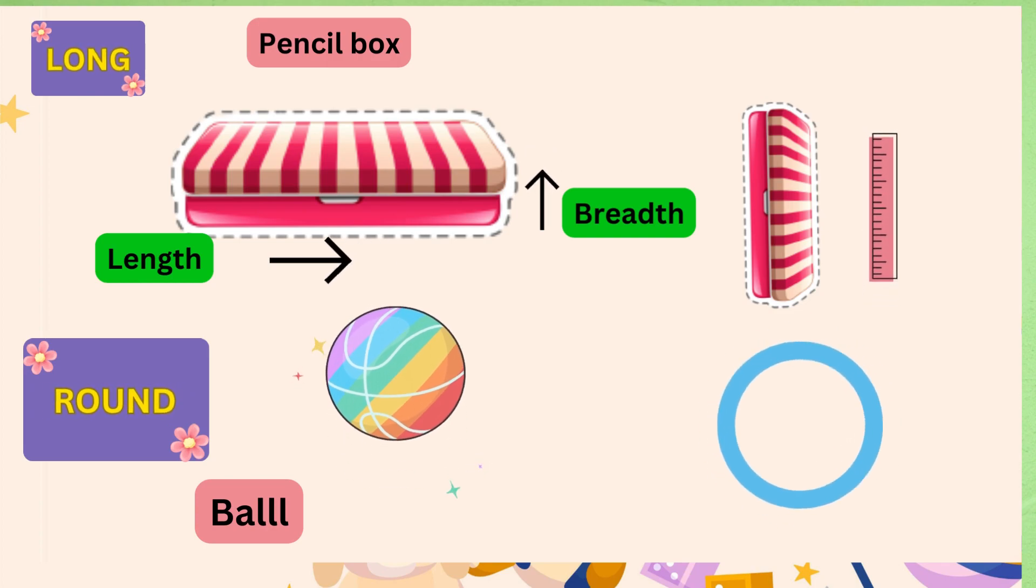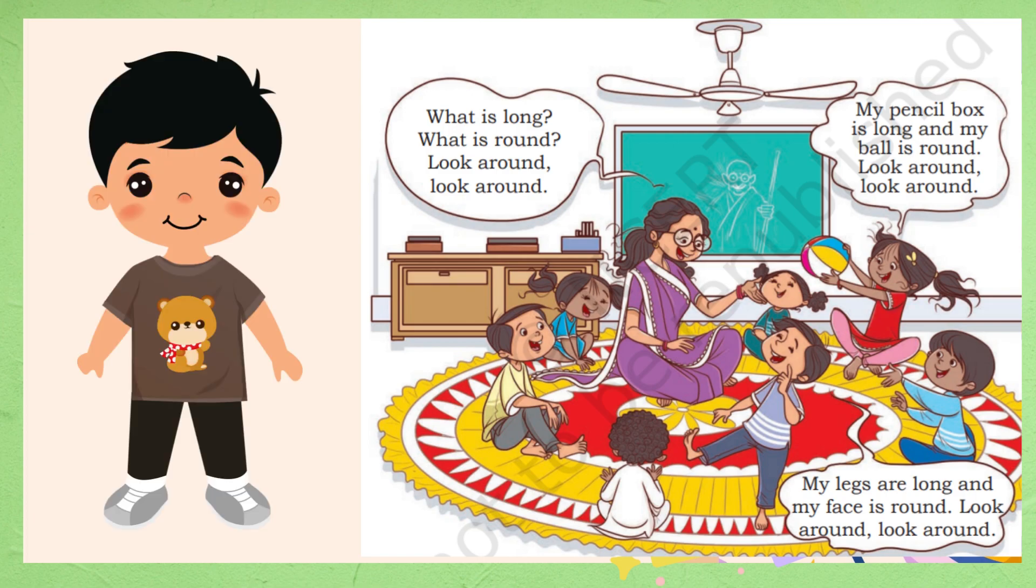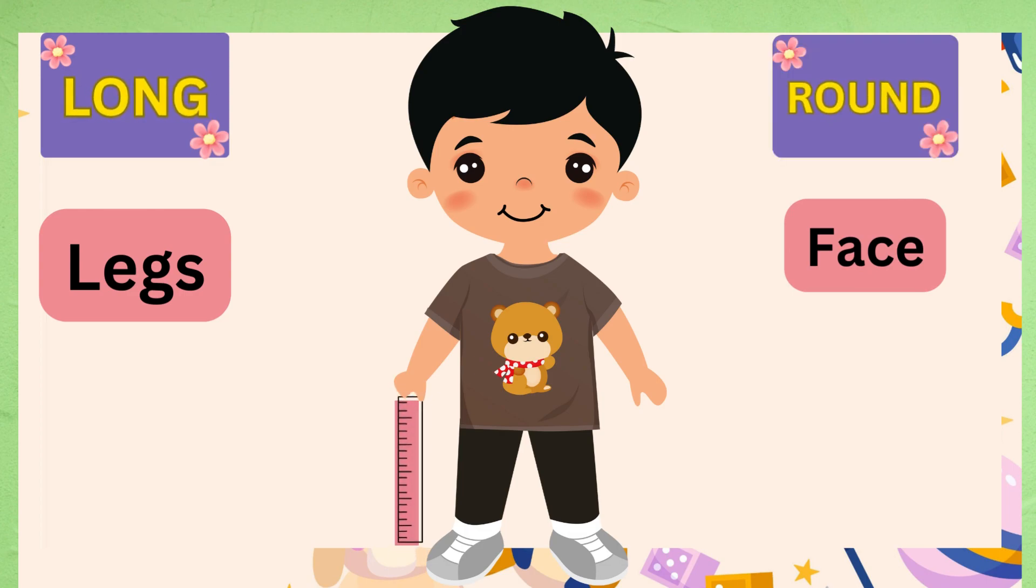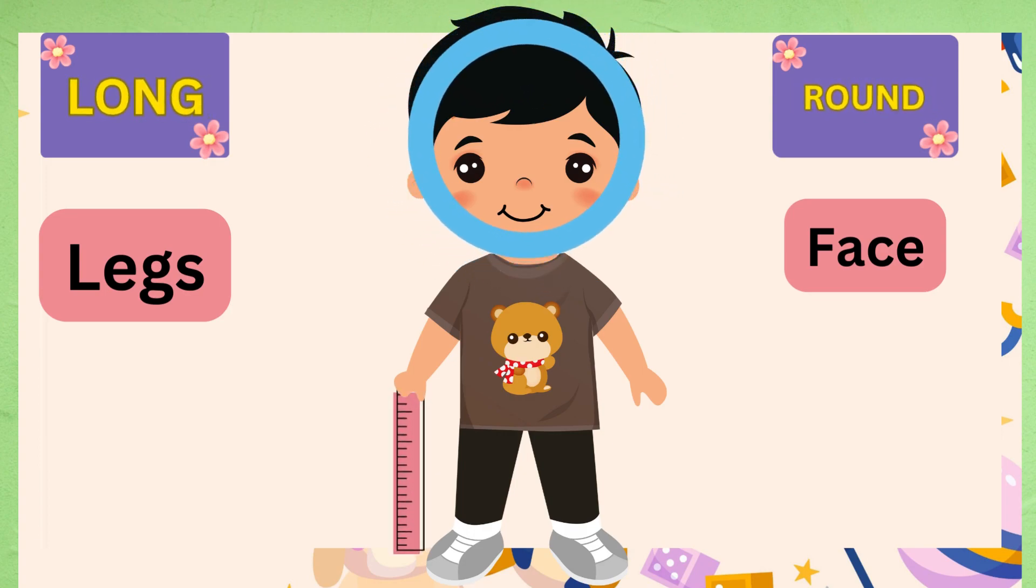Now this boy is saying my legs are long and my face is round. Look around. What is he saying is long? He is saying his legs are long. Legs mean these two body parts. We discussed this in the last chapter. If you haven't watched the video, please go and watch those videos. See, his face is completely round, right? So in this way both children gave examples of long and round to Vidya didi.